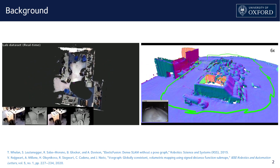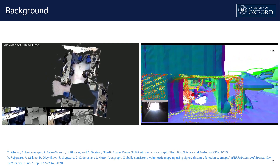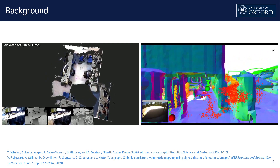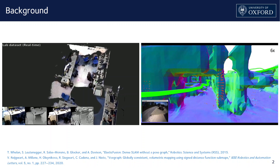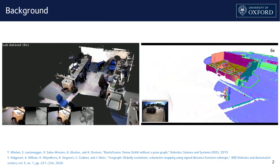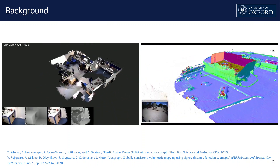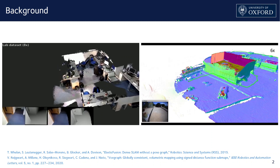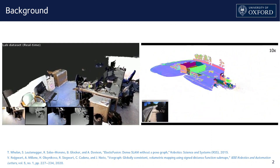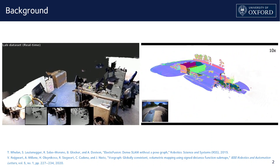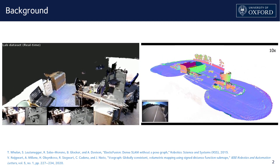For large-scale outdoor environments, VoxGraph presents an efficient LiDAR mapping system. It is lightweight enough to run on a CPU on a drone. In this particular demonstration, the integration range of a LiDAR scan is 16 meters and the voxel resolution in the reconstruction is 20 cm.